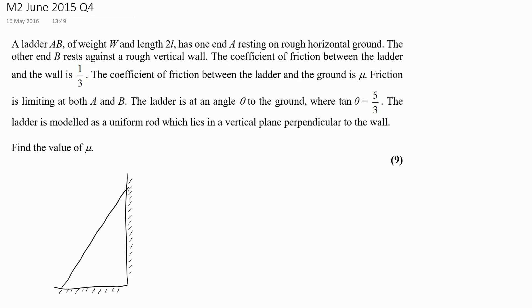I'm going to draw the ladder on and first of all think about which way friction is acting. The easiest way I find to do this is to think about what would happen if there was no friction, because if there was no friction the ladder would slip down the wall and away from the wall. If the ladder slips down the wall, friction must be acting up the wall to prevent that. Likewise, if the ladder is not slipping away at the bottom, there must be friction acting to prevent this — so there are my two directions for friction.